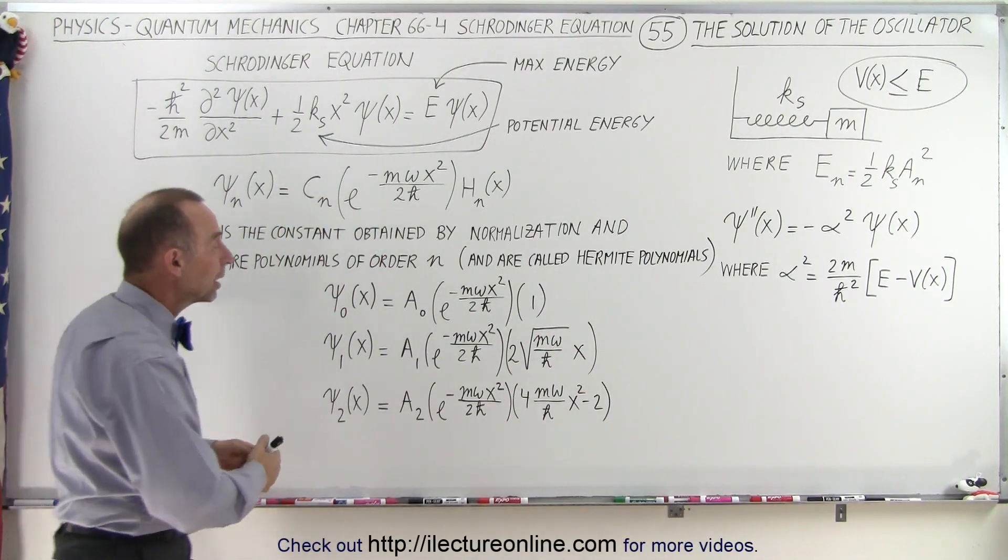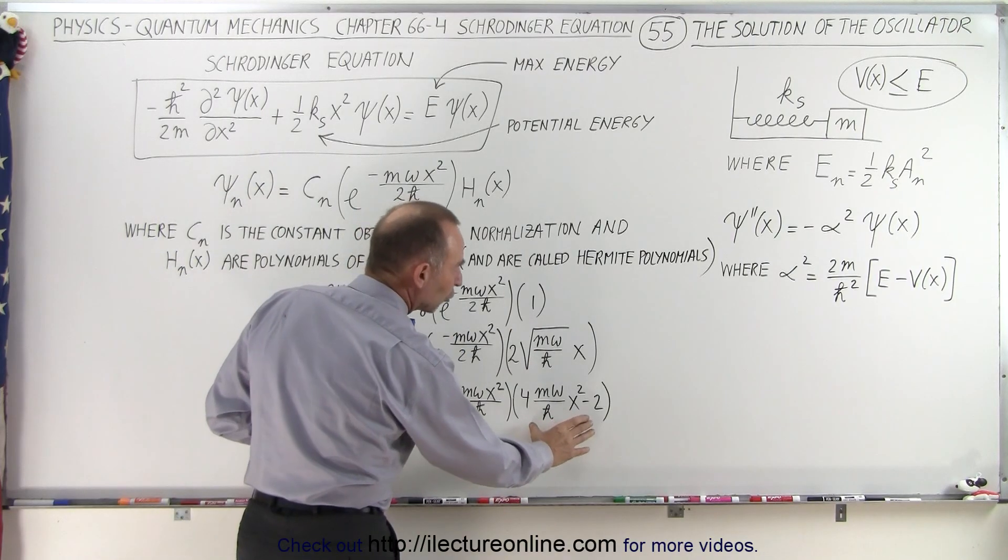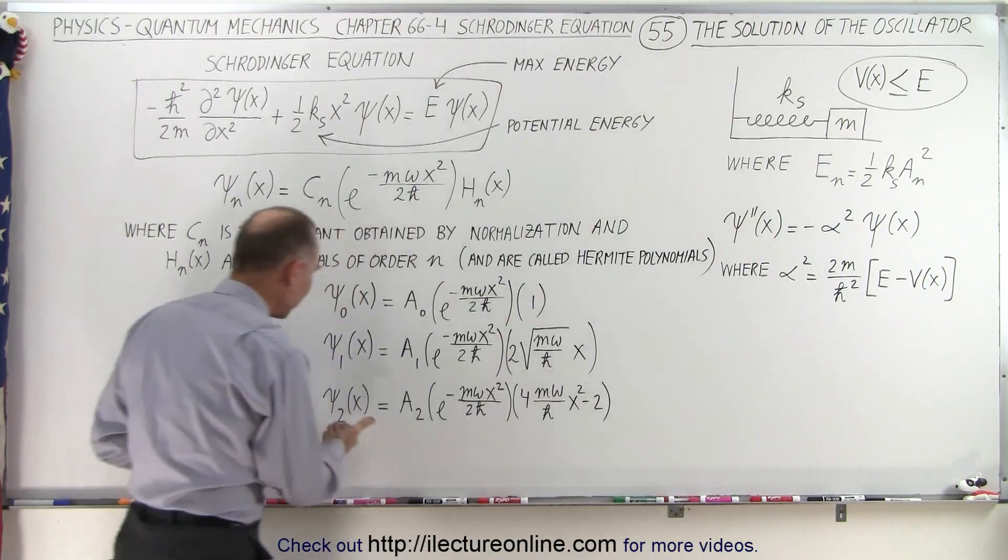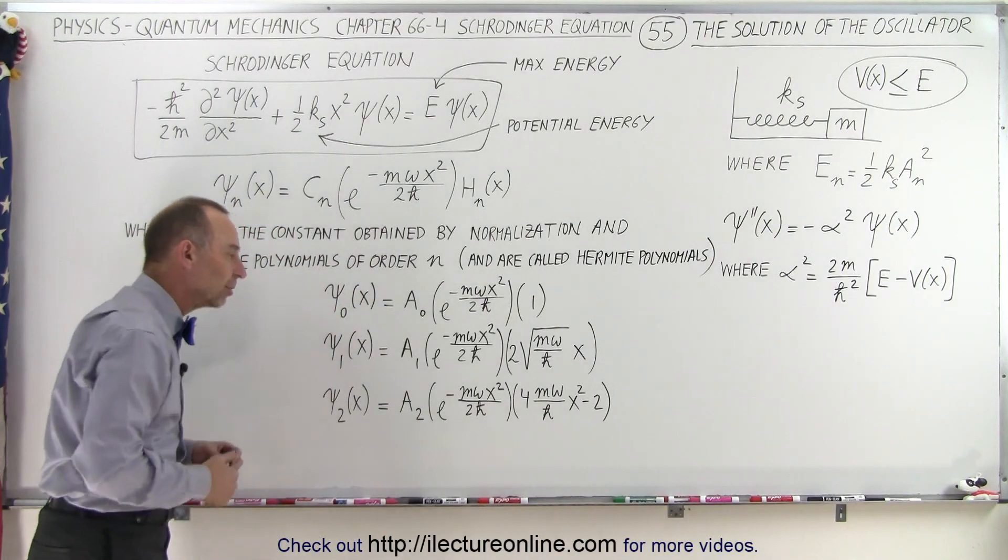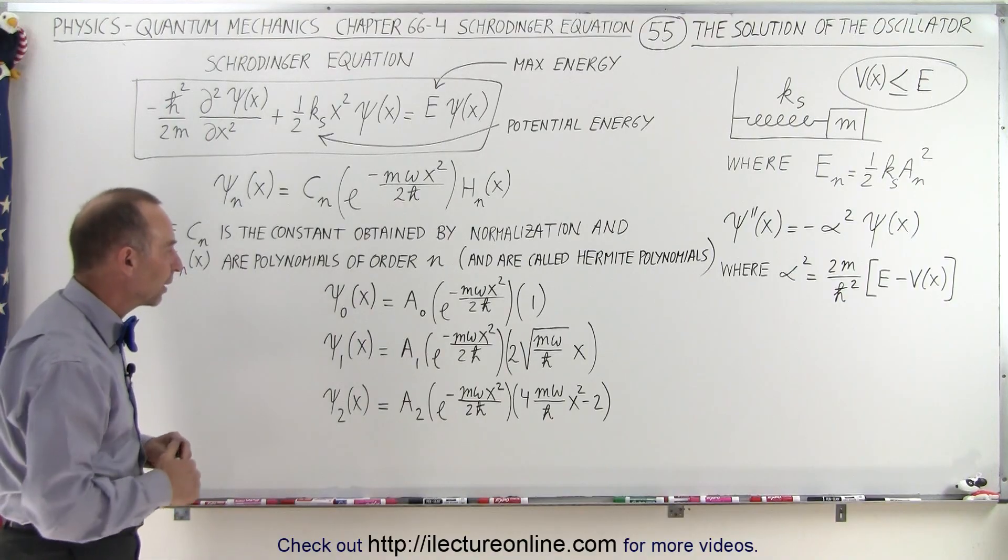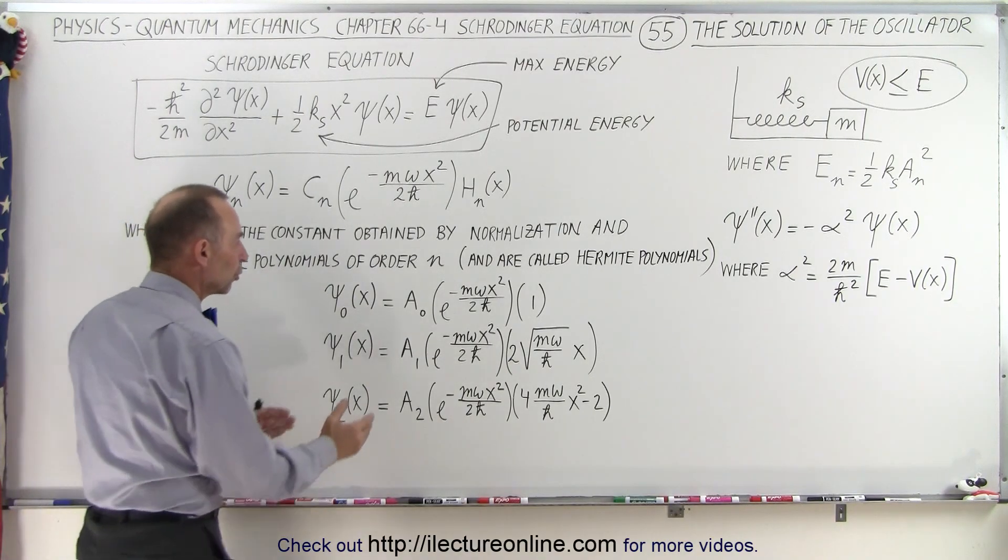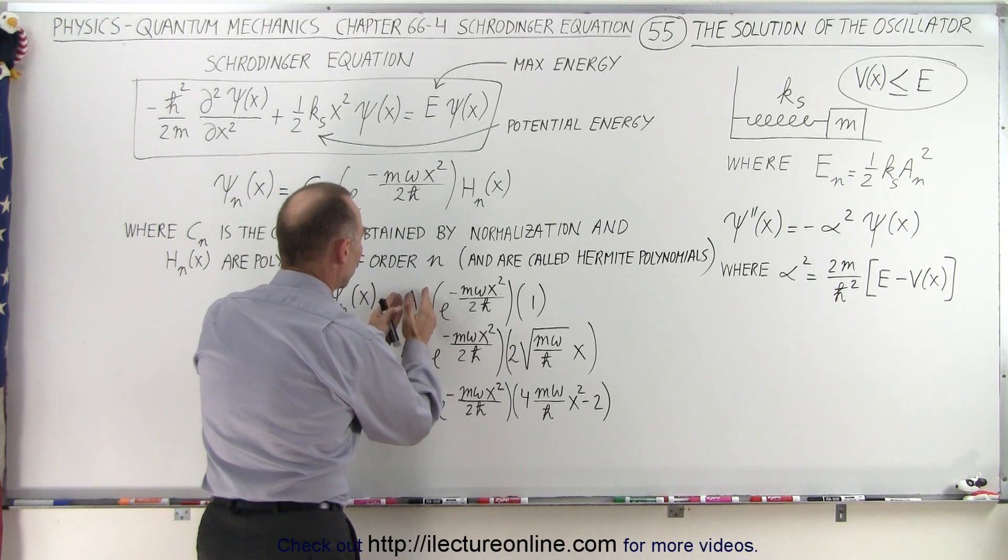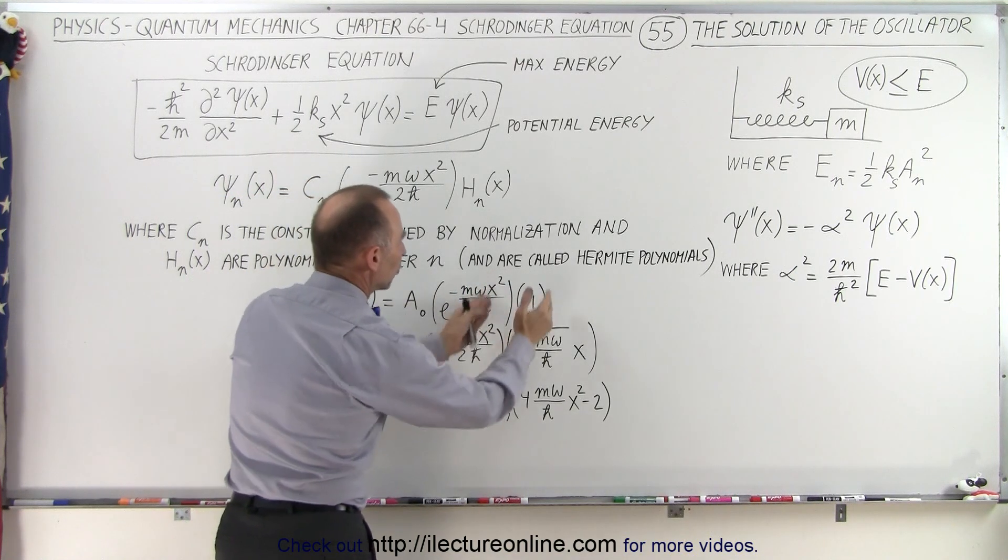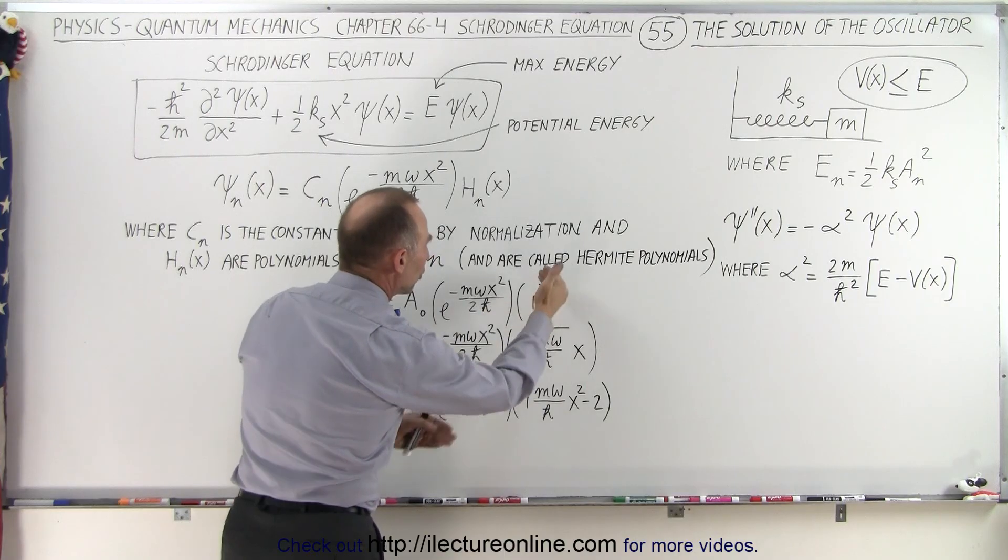You'll get a more complicated solution to the wave function as you go to higher and higher orders as the quantum number goes to higher states. You'll see that as we show you how to calculate the Hermite polynomials. For each solution, you're going to get a number (that's a constant), an exponential decay function, and a Hermite polynomial.